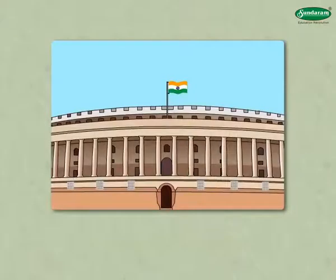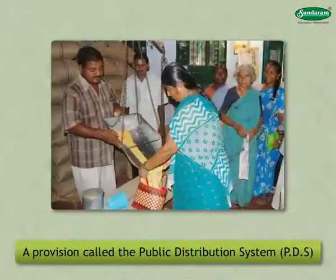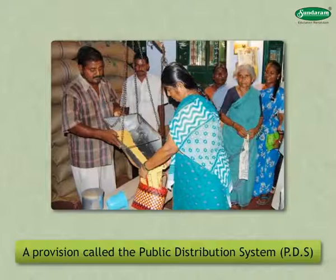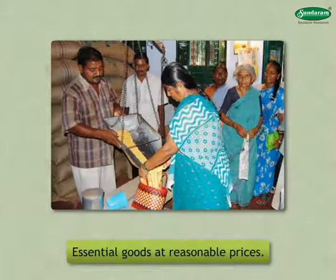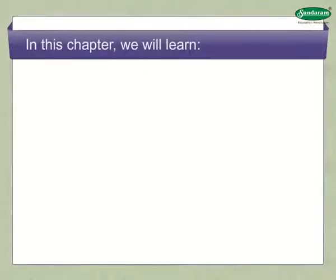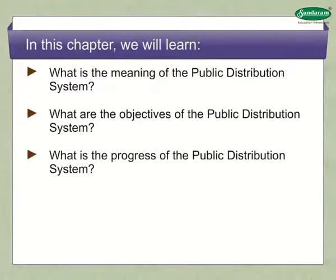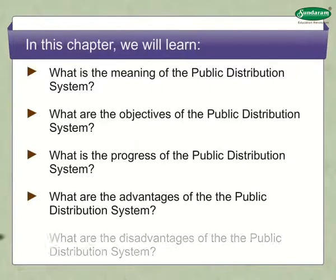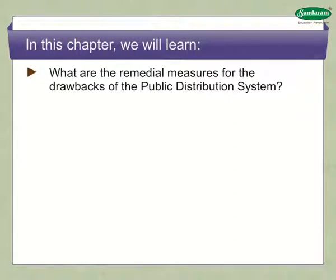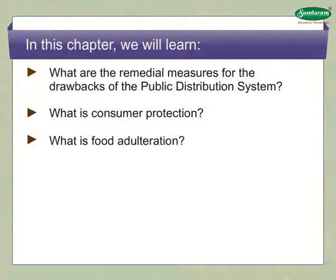The Indian government has made a provision called the Public Distribution System or PDS to supply essential goods at reasonable prices. In this chapter, we will learn about the meaning, objectives, progress, advantages and drawbacks of the PDS, and remedial measures for the drawbacks. We will also learn about consumer protection and food adulteration.